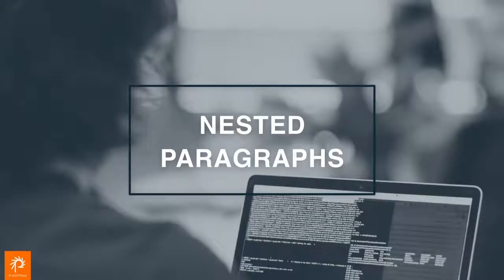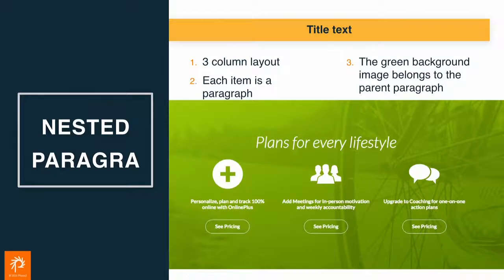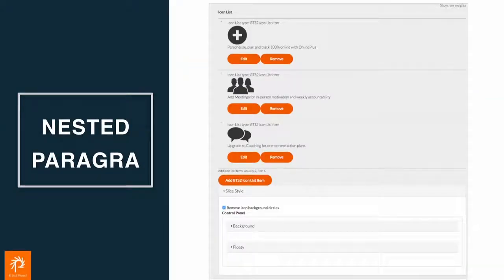For even further complexity or simplification of complexity, you can nest paragraphs within paragraphs. Instead of having a really single complex paragraph type, you can have simple paragraph types that are then pulled into a more complex type. Here is an example where each of those three items is its own paragraph type, and then the big parent - 'complete plans for every lifestyle' - is a parent paragraph. With a little bit of customization, theming, and the paragraphs type help module, the editor gets a very nice experience to add what is, in the end, a fairly complex layout.